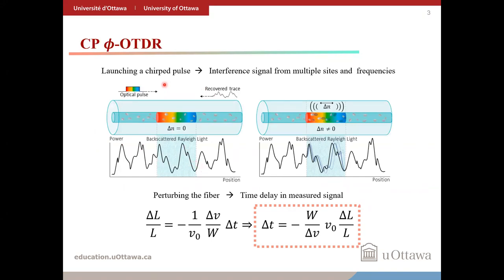Chirped pulse φOTDR relies on sending optical pulses with an inherent frequency-sweep into optical fibers and recording the signal generated due to Rayleigh backscattering. If changes in temperature or strain shift the scattering centers, the recorded Rayleigh signal will experience a small time delay. The relationship between the time delay and the perturbation will be linear for small perturbations. Note that a small chirp delta-v implies high sensitivity and a low sensing range, while higher chirping ranges imply lower sensitivity but an extended sensing range.